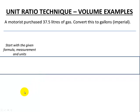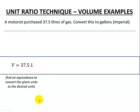So start with our given value in units. So volume is 37.5 liters. Capital L is the symbol for liters. We want an equivalence to convert liters to our desired units of imperial gallons.